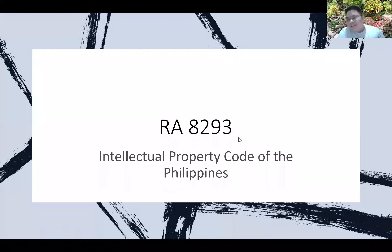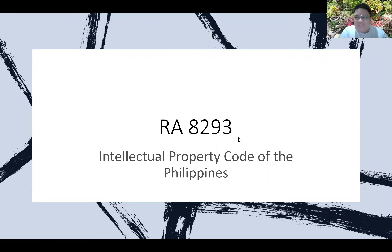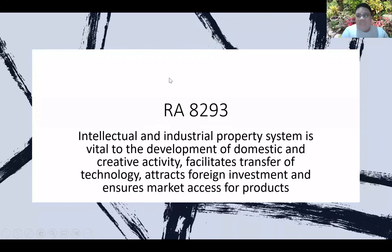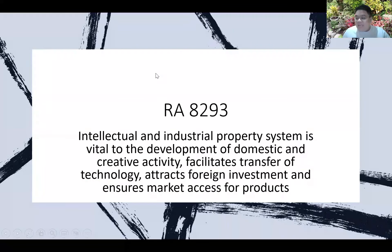As a nurse, there are more or less 50 laws you need to familiarize yourself with, and among these is RA-8293. Board exam-wise, some exams have five laws coming out and others have none, so familiarize them early. RA-8293 is the Intellectual Property Code of the Philippines, existing because of the state's mandate that the Intellectual and Industrial Property System is vital for development of creative activity, facilitating transfer of technology, attracting foreign investment, and ensuring market access for products.